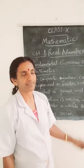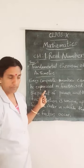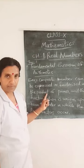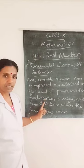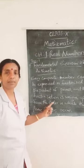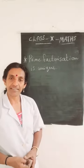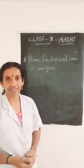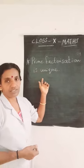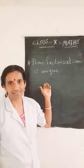The Fundamental Theorem of Arithmetic is stated as: every composite number can be expressed or factorized as the product of primes, and this factorization is unique apart from the order in which the prime factors occur. In a simplest way, we can say: prime factorization is unique. This theorem has many applications.